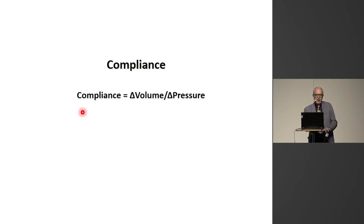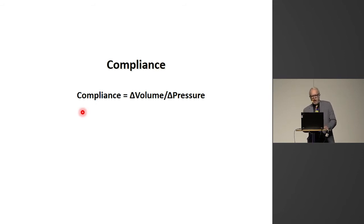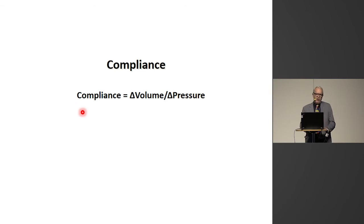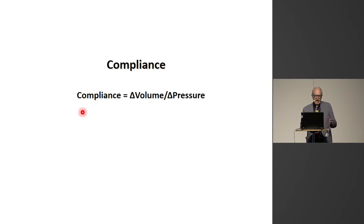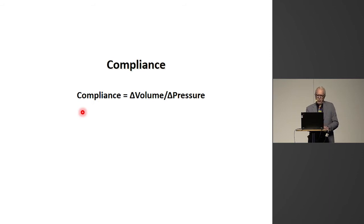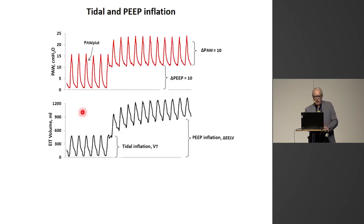You know that compliance is determined as the change in volume divided by the change in pressure. Normally we take the tidal volume and divide it by the airway driving pressure to get the respiratory system compliance. But there are other ways to inflate the lung, and that is by PEEP inflation.